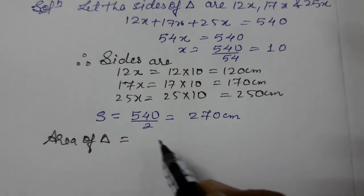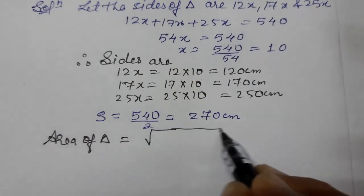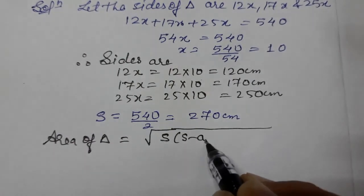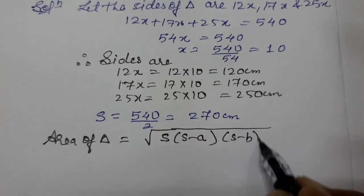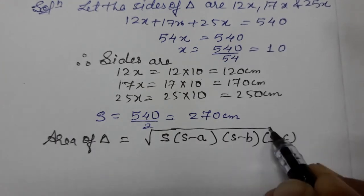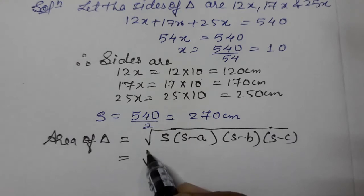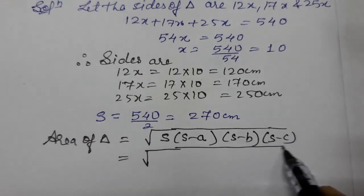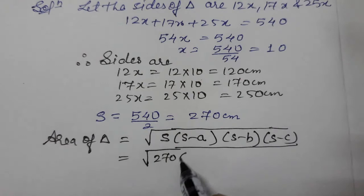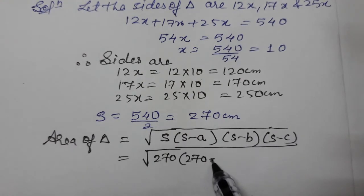Square root of s into s minus a into s minus b into s minus c. Put the value. So what is s? 270. 270 into 270 minus first side is 120.